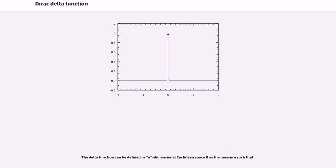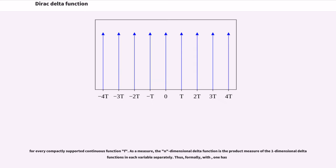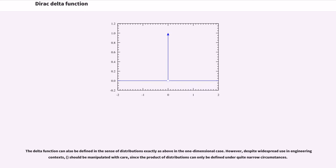The delta function can be defined in N-dimensional Euclidean space Rⁿ as the measure such that for every compactly supported continuous function f, the integral equals f(0). As a measure, the N-dimensional delta function is the product measure of the one-dimensional delta functions in each variable separately. The delta function can also be defined in the sense of distributions exactly as in the one-dimensional case.